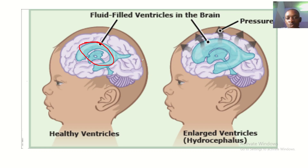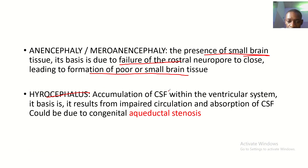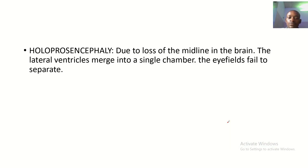Next is hydrocephalus. You can see the normal head where the ventricles are small, but in hydrocephalus the ventricles swell up, making the head big. Hydrocephalus is the accumulation of CSF within the ventricular system. It results from impaired circulation and absorption of the CSF, and could be due to congenital aqueductal stenosis — a blockage of the aqueduct area of the ventricles.